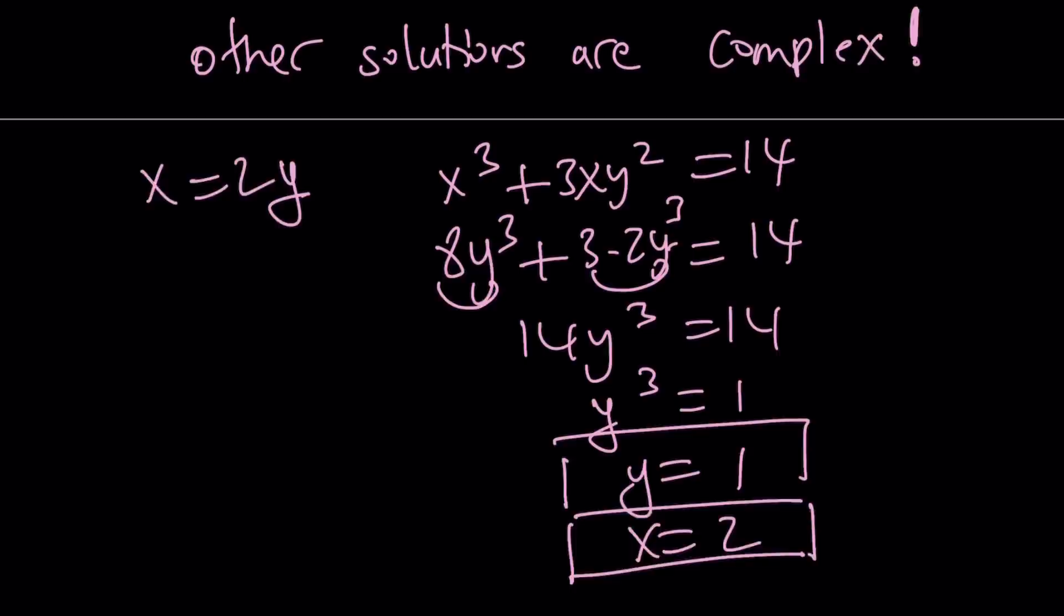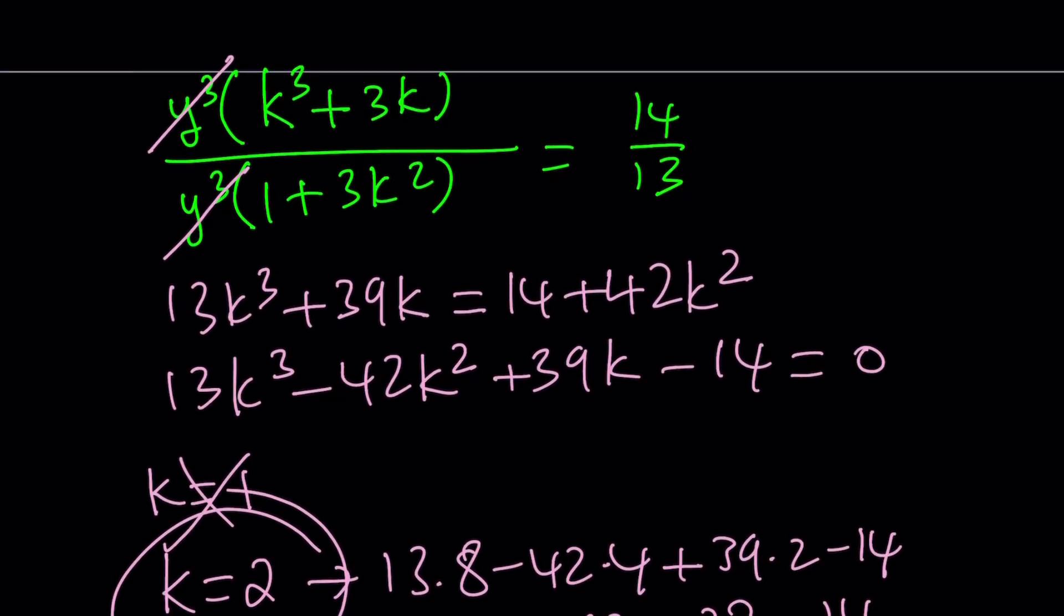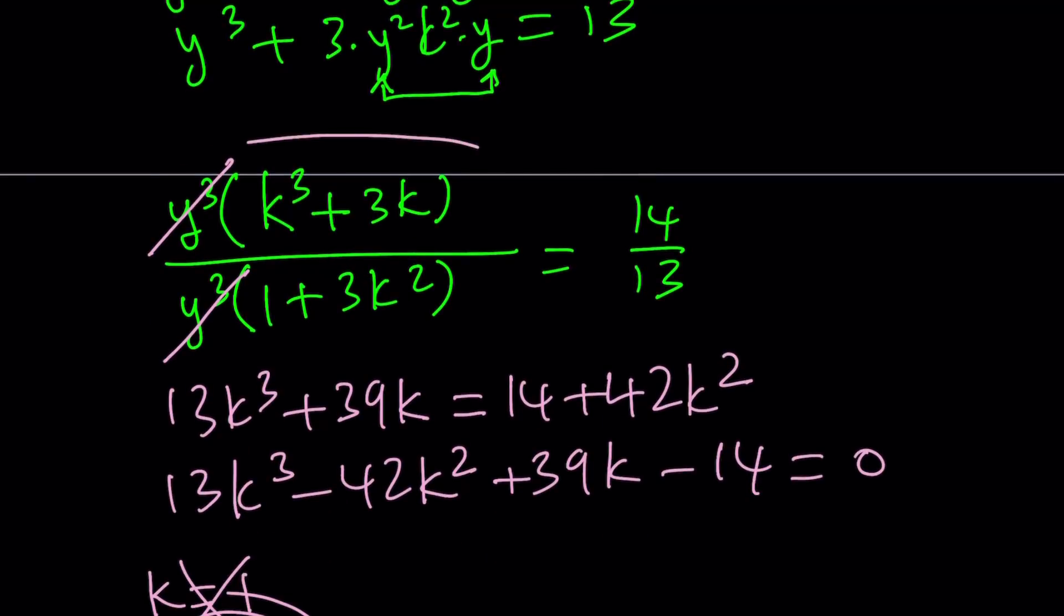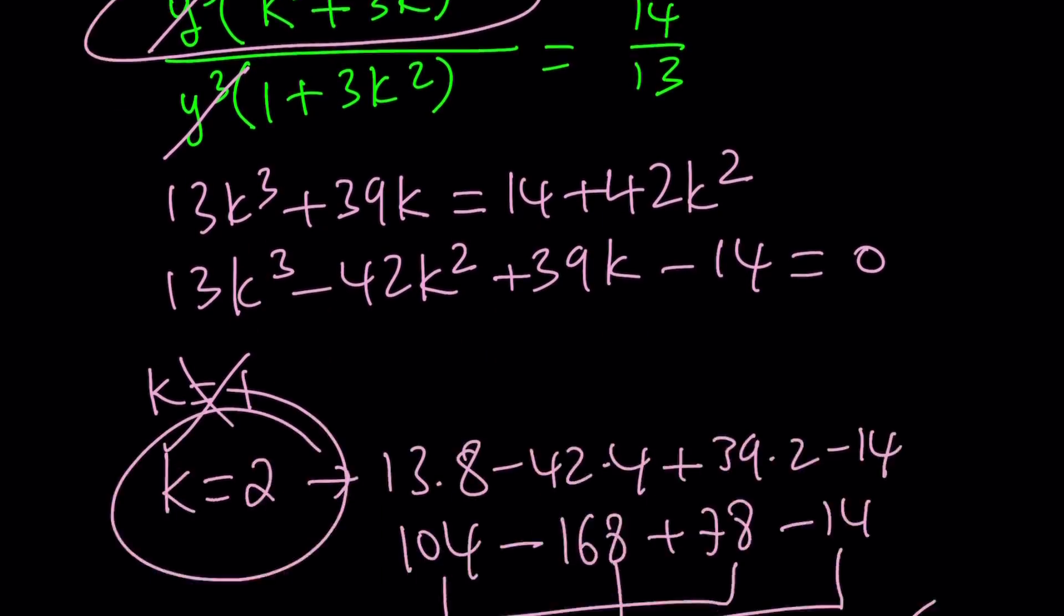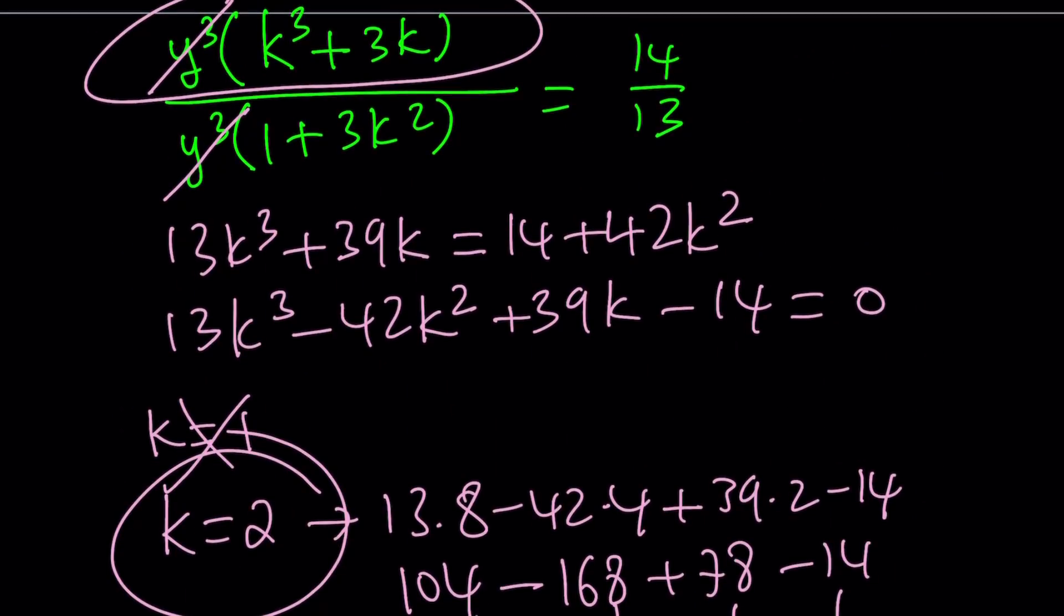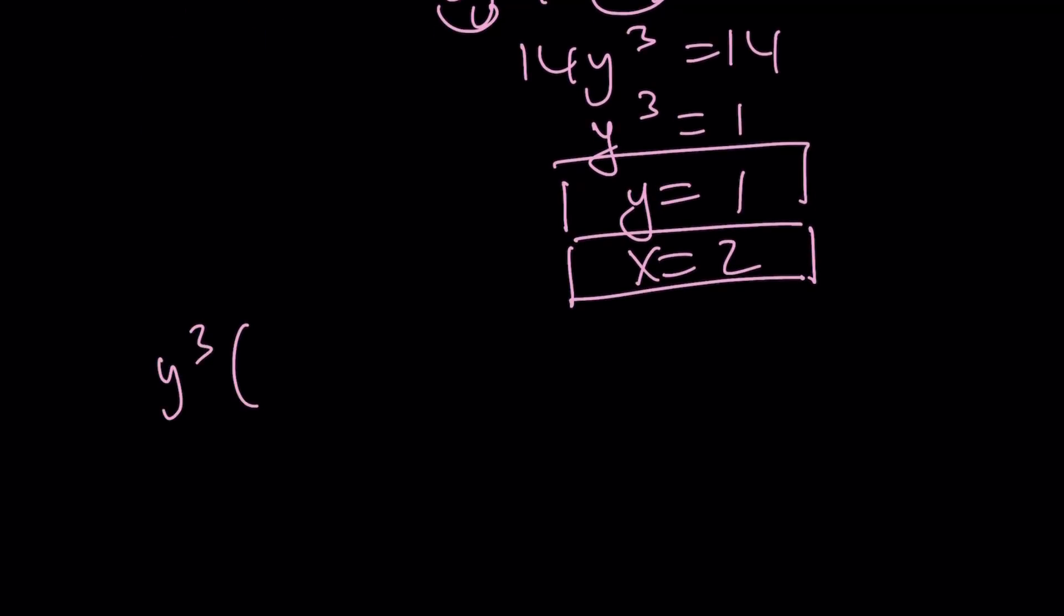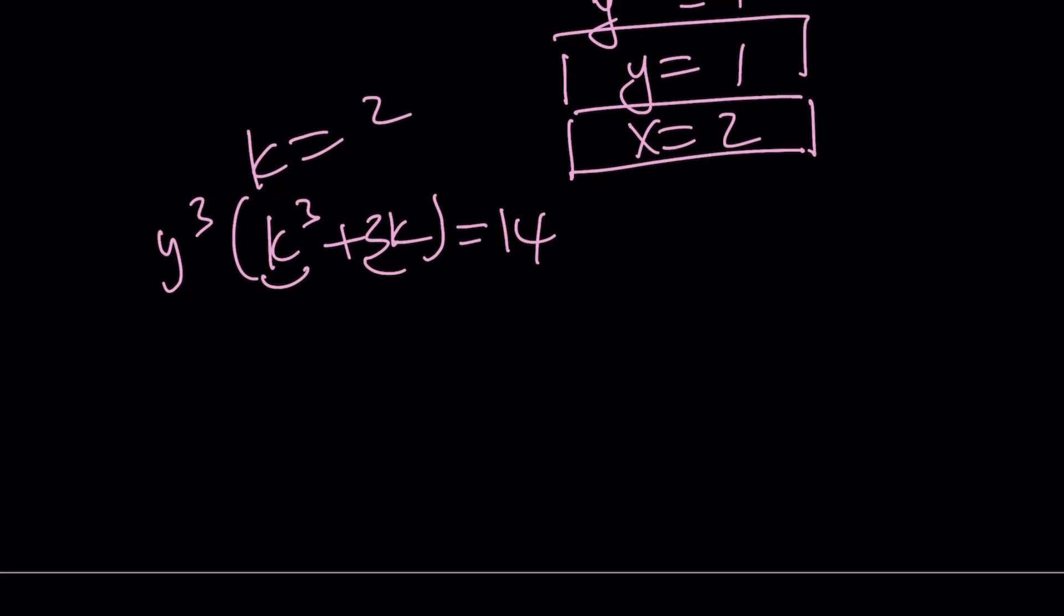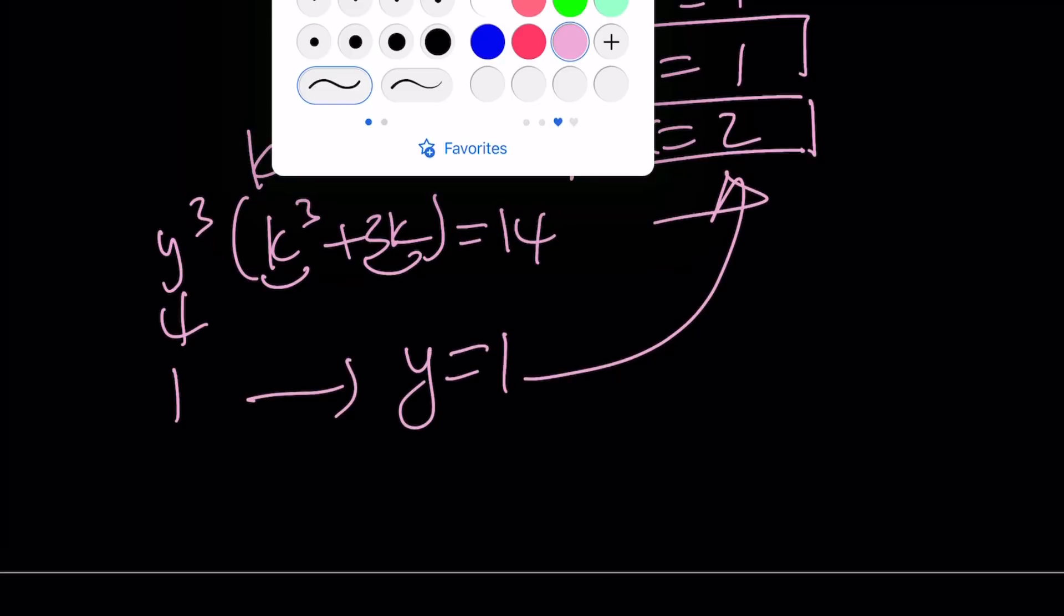But do we really have to do this? No, I don't think so. Take a look at this expression right here. After substituting x equals yk, we got this nice expression here. y cubed times k cubed plus 3k, right? So we can use that expression. So y cubed times k cubed plus 3k is equal to 14. And we know that k is equal to 2, right? So if k is equal to 2, then this is going to be 8 plus 6, which is 14. y cubed is going to be 1. And y is going to be 1, so on and so forth. Awesome. So let's go ahead and talk about the second method now.